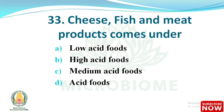Cheese, fish, and meat products come under — options: low acid food, high acid food, medium acid food, acid foods. The right answer: option B, high acid food.